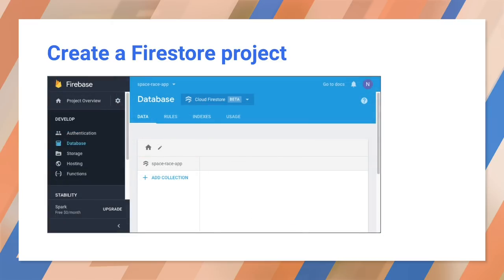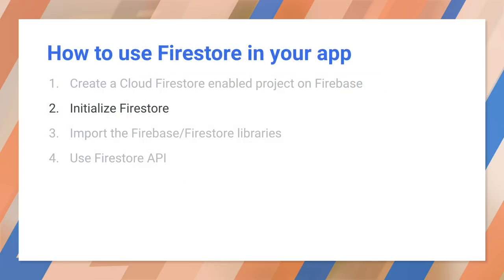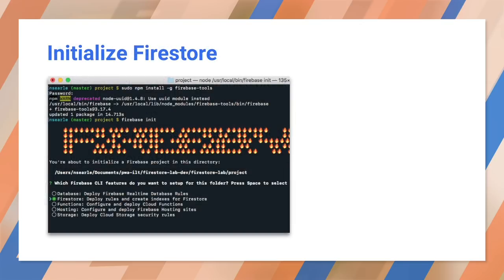You will definitely need to change those permissions to be more restrictive before you publish your app to the web. Once you've enabled Firestore, you get an empty database that's ready to be connected to your app. To initialize Firestore in your app from the command line, you must first do a global install of the Firebase tools. Then make sure you're in your app's home directory and do a Firebase init. This will bring up several prompts — the first lets you choose which CLI features you want. In this case, we just want Firestore.